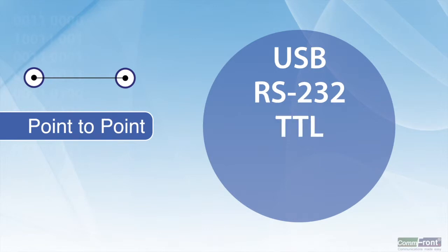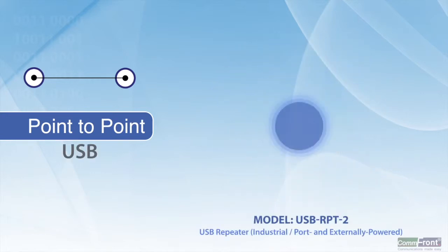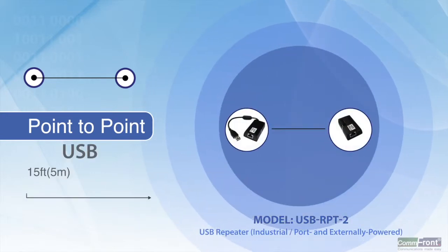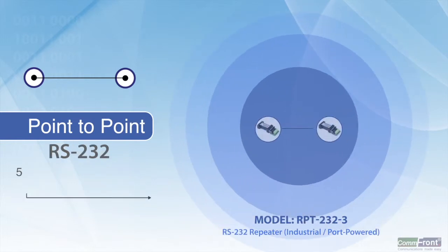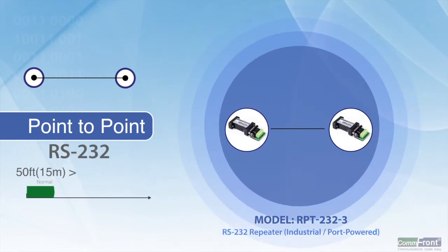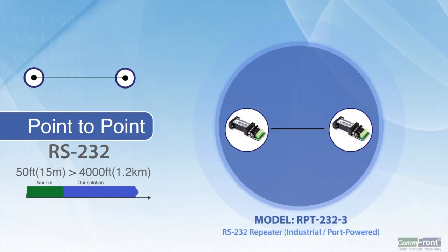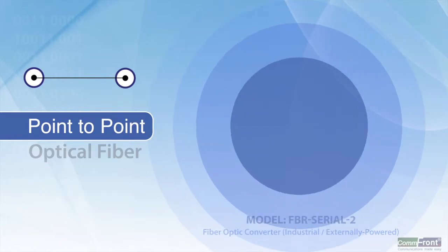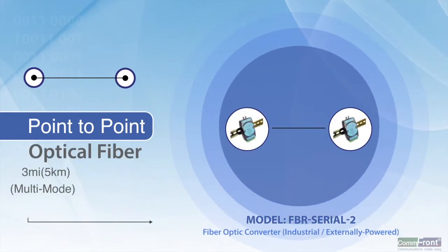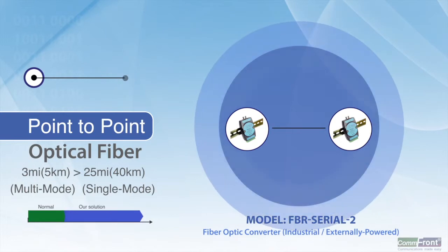Point-to-point can also be used for one-on-one optical fiber extension. Depending on the signal and cable types, the extended distance ranges from 250 feet for USB to 4,000 feet for RS-232 and TTL, and from 3 miles to 25 miles for optical fiber.